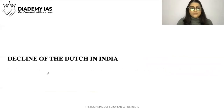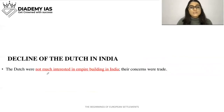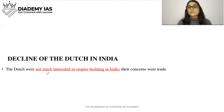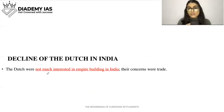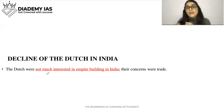The Dutch were not much interested in empire building in India — their concern was trade. This was the biggest difference between the Dutch and the other European powers: other powers were interested in empire building, but the Dutch were primarily focused on trade and profits.